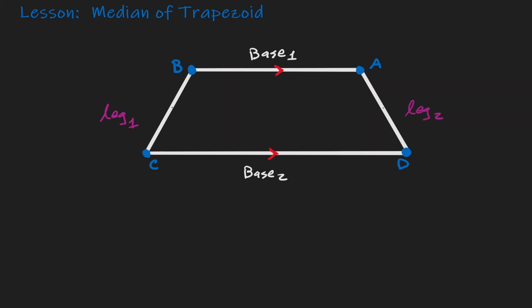What if we find the midpoint of BC? Let's call that point E. If E is the midpoint, then we know that BE is congruent to EC. And let's find the midpoint of the second leg — let's call that point F. If F is the midpoint, then AF is congruent to FD.